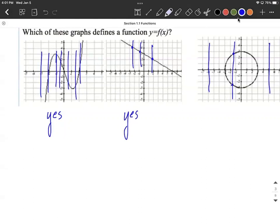When you intersect in more than one place, what that means is it fails the vertical line test and it's not going to be a function.